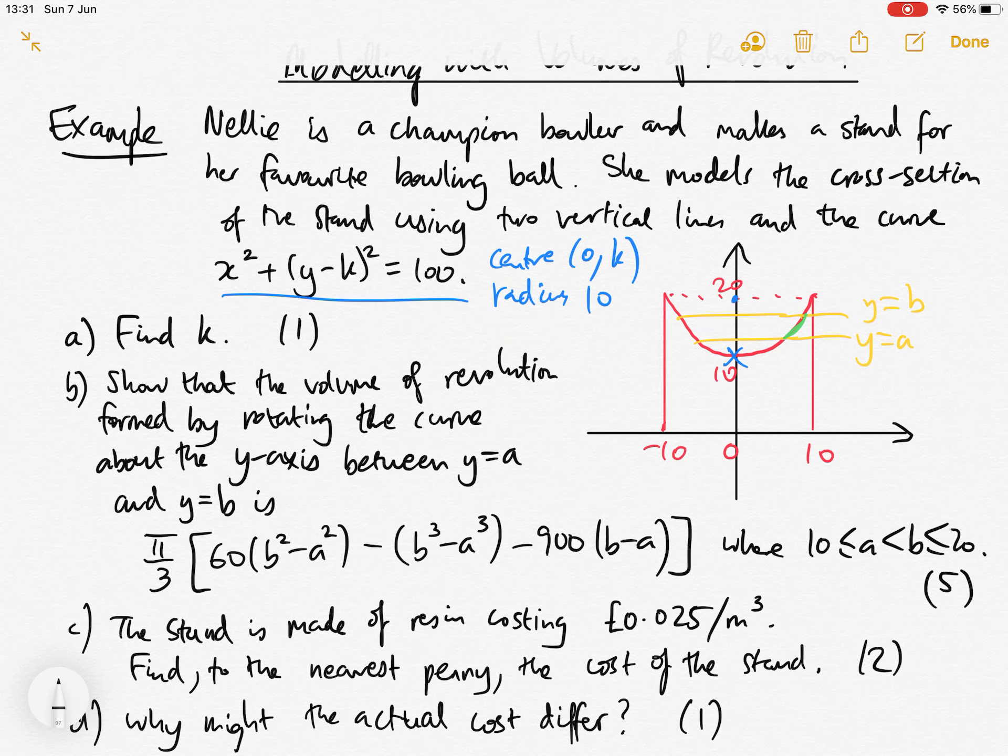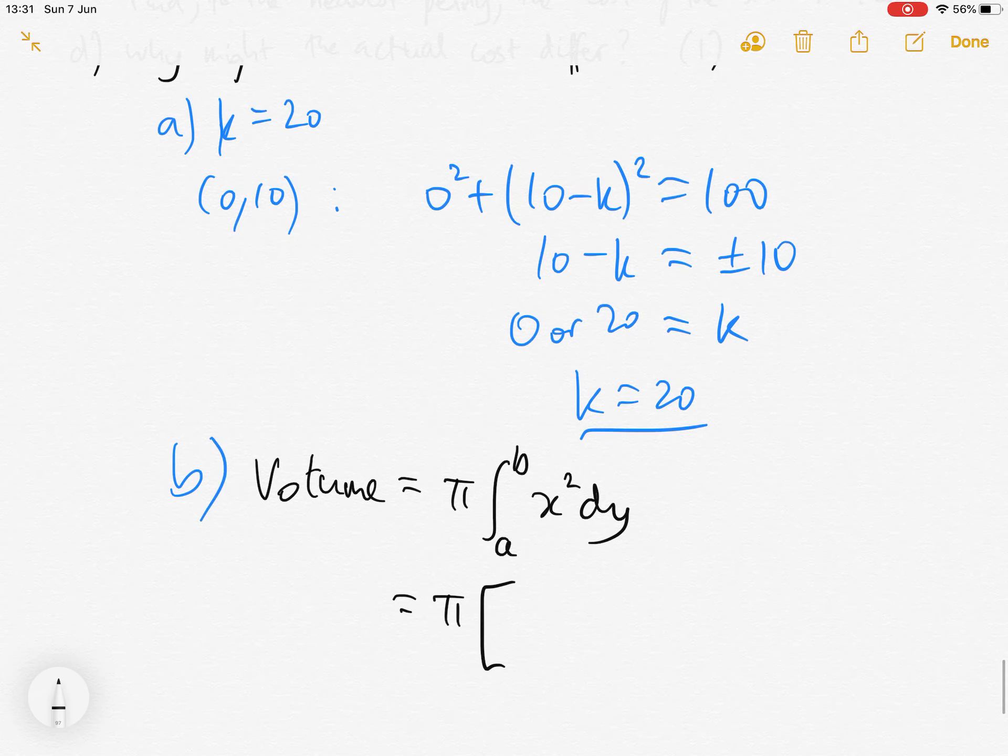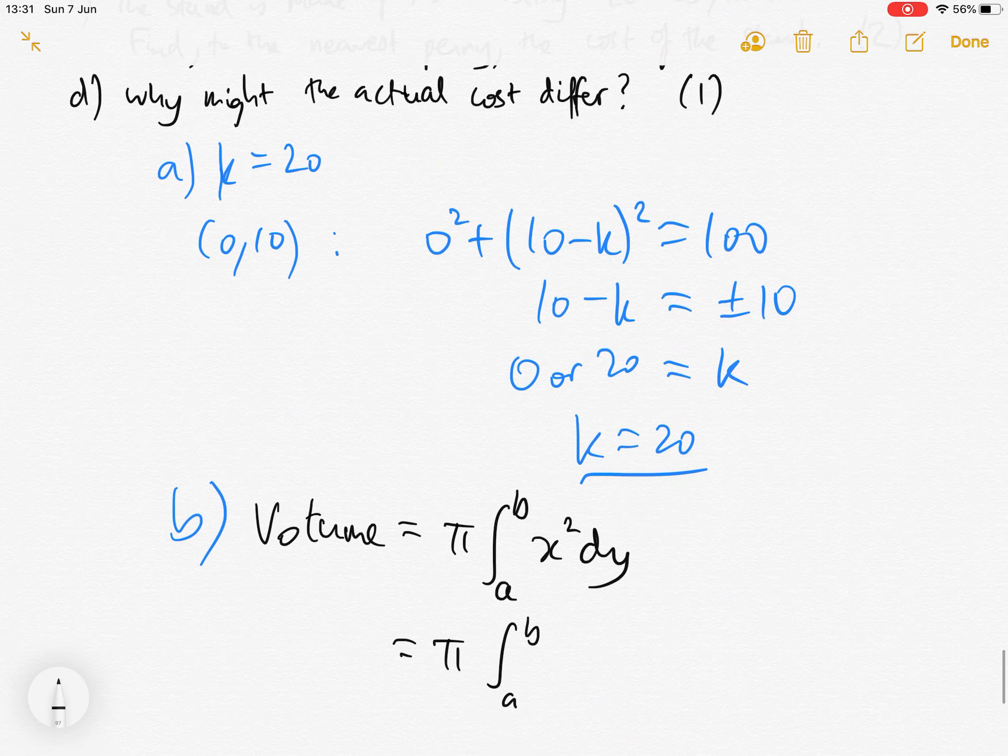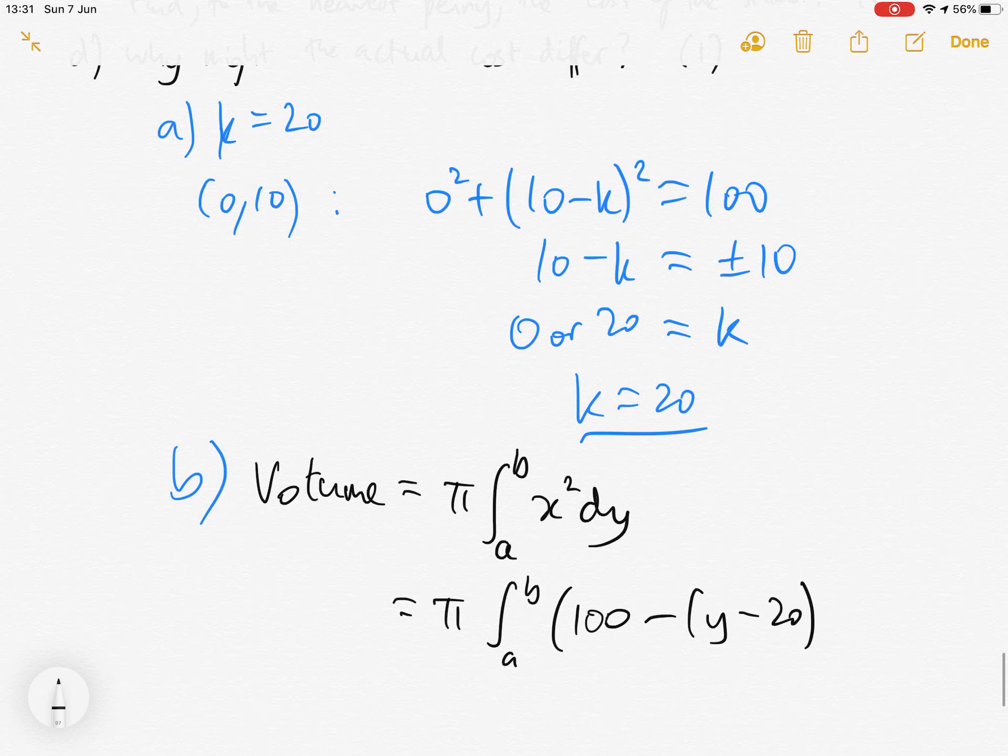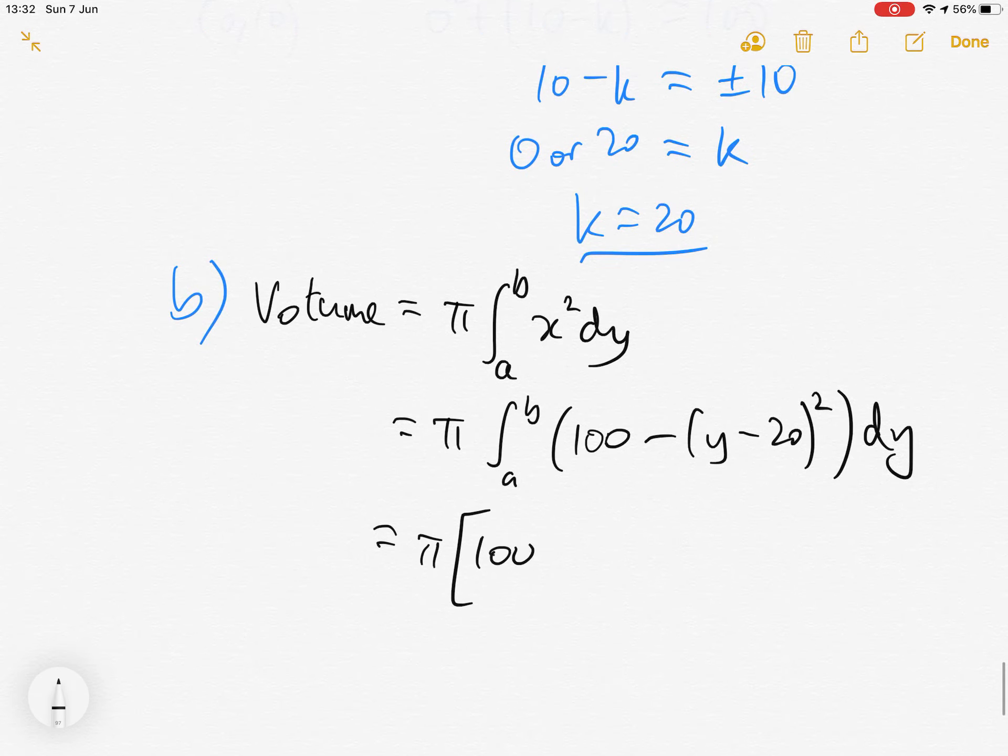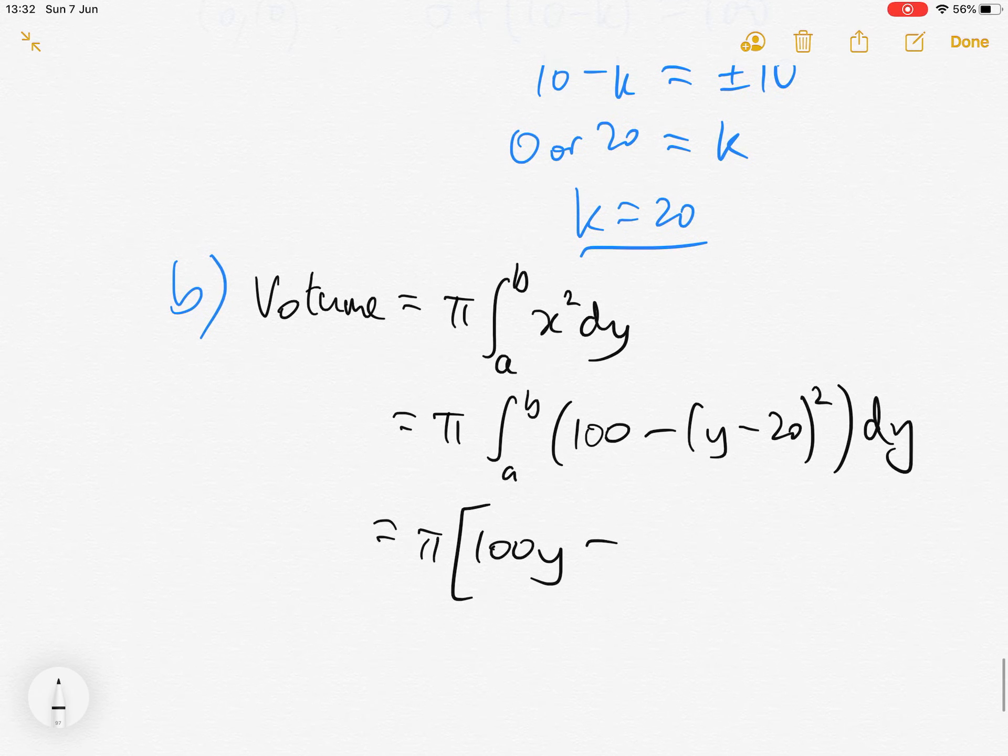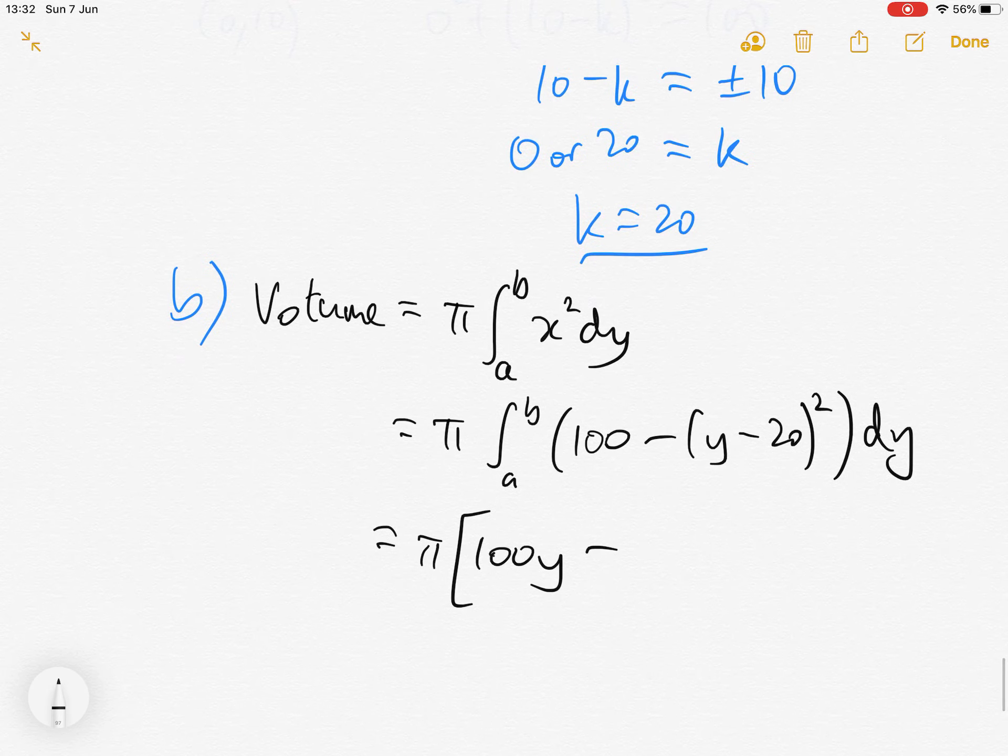x squared is given by 100 minus y minus k squared. This is pi times the integral from a to b of 100 minus y minus 20 squared dy. Then we integrate this: pi times 100y minus y minus 20 cubed over 3, between a and b.